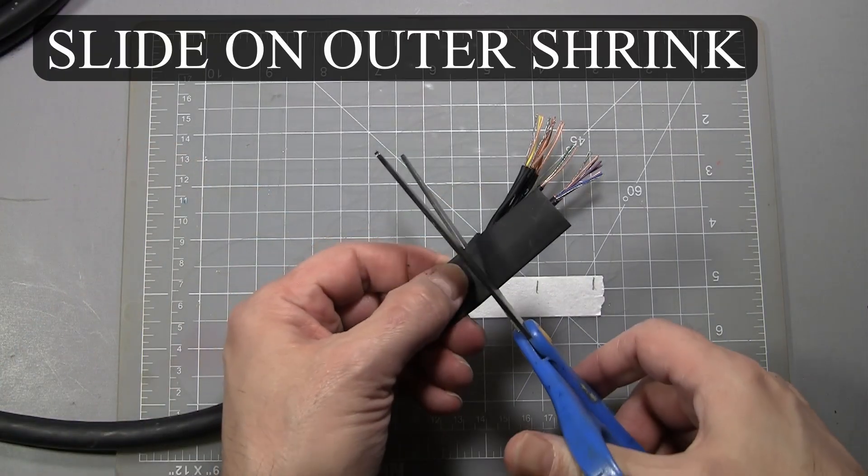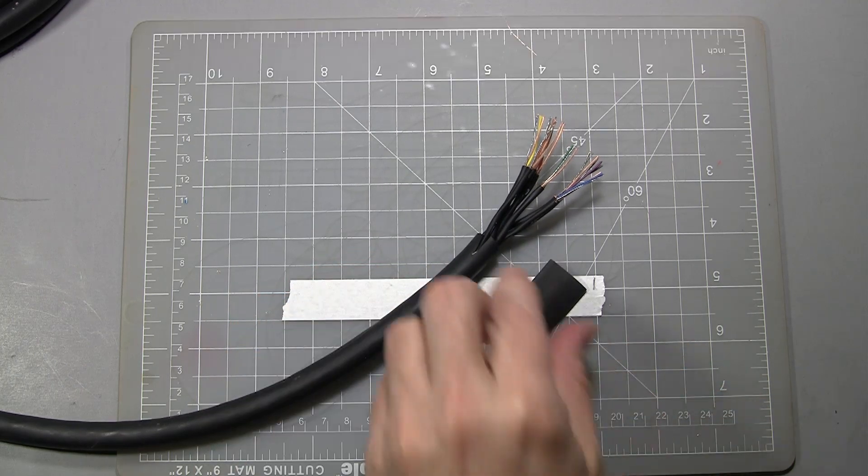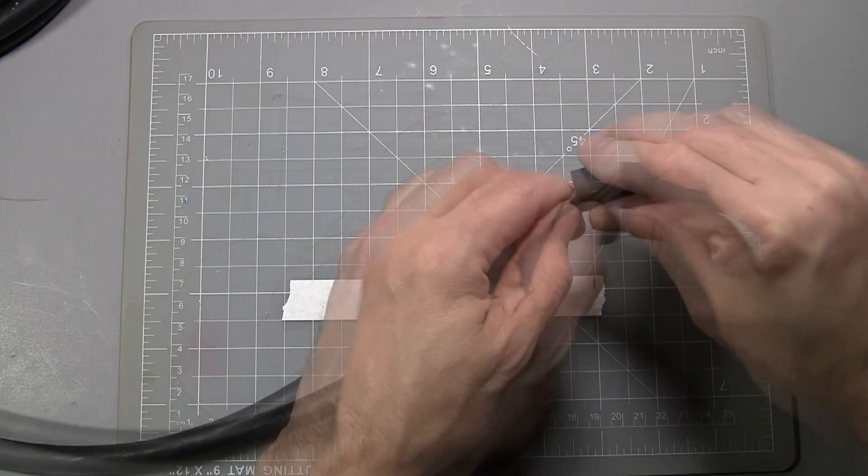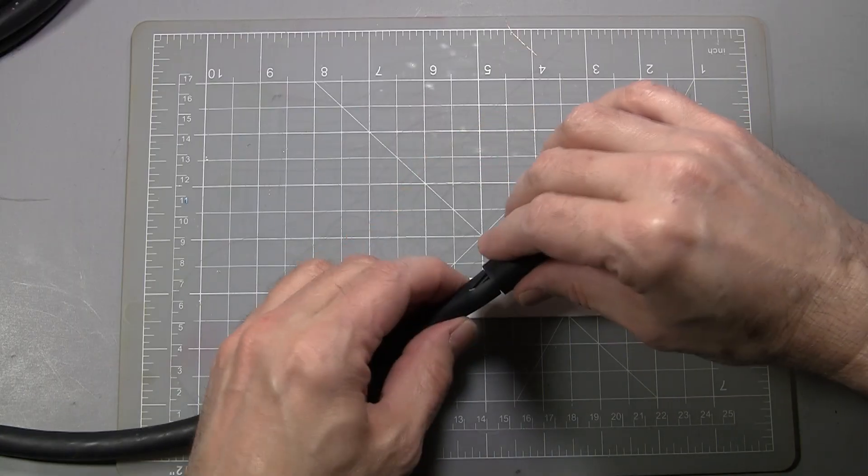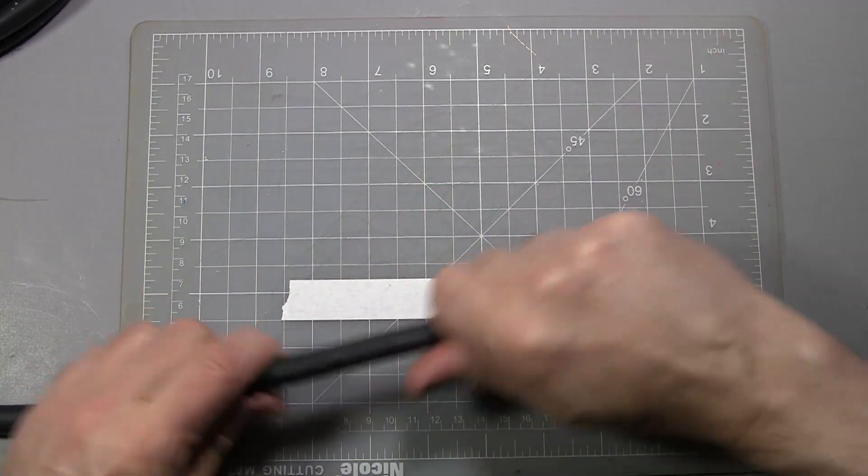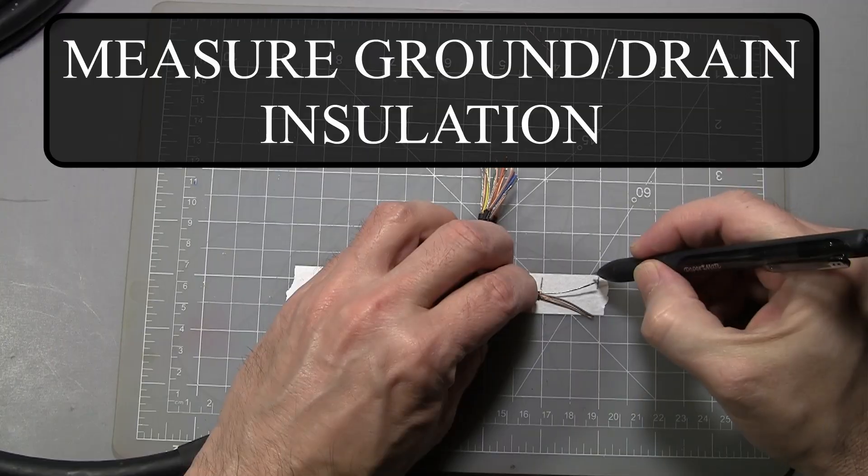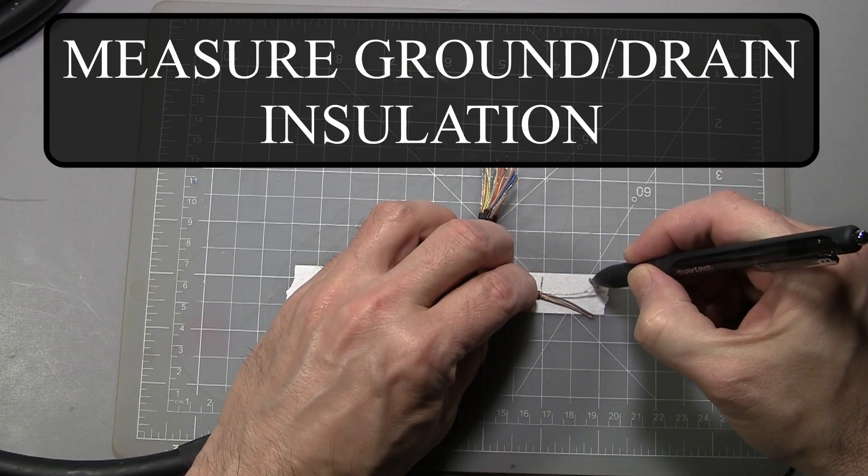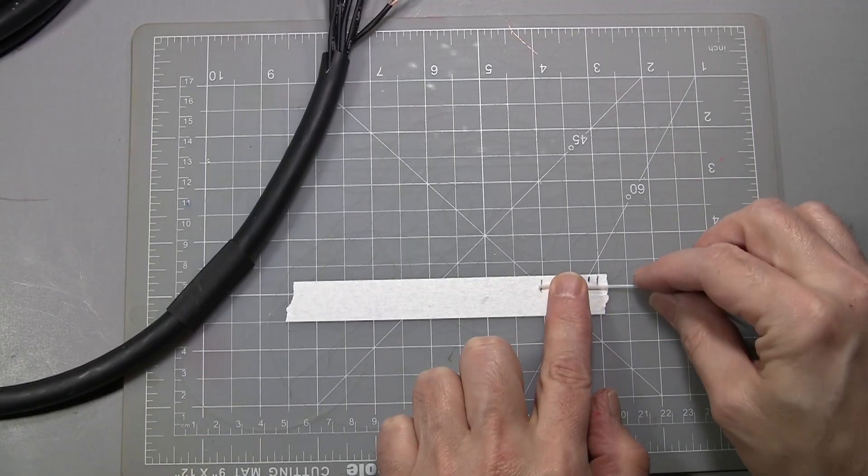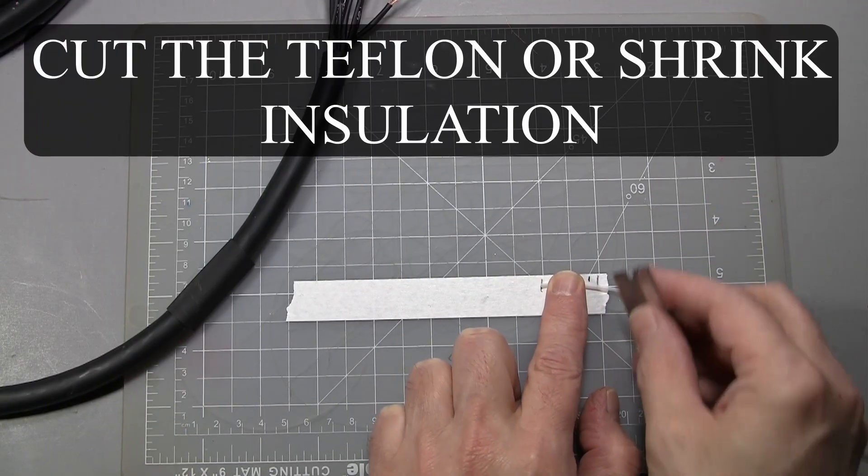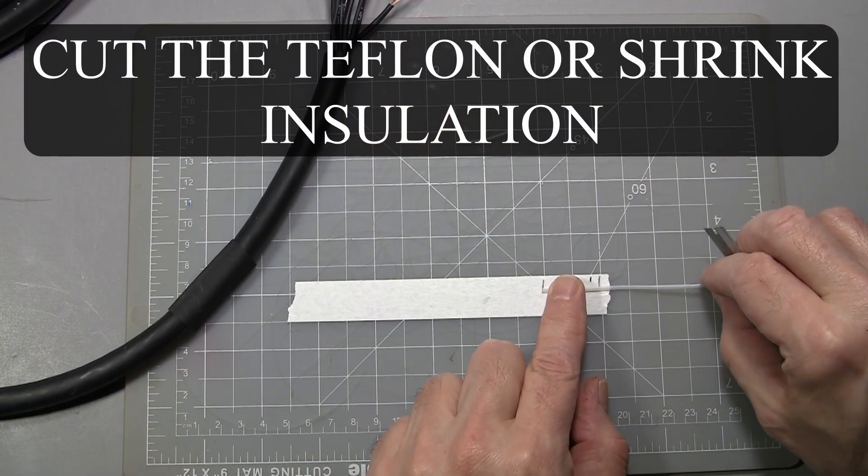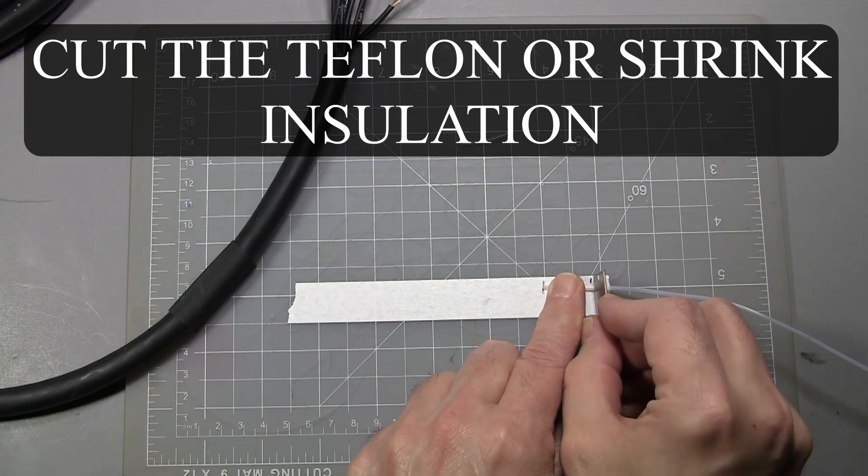Remember to put the outer jacket shrink tubing on before you start to wire the connector. Again I mark on my template the length to cut the Teflon tubing to cover the drain wire. The trick to neat wiring is consistency. I prefer to cut the Teflon tubing and shrink tubing with a razor blade. It makes for a less ragged edge.